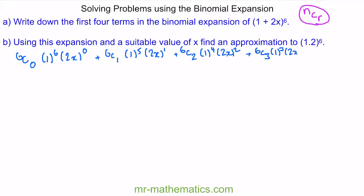Now we have the first four terms. We can tidy this up. We know that 6C0 is 1, as is 1 to the 6, and 2x to the 0. So all of that first term becomes 1.